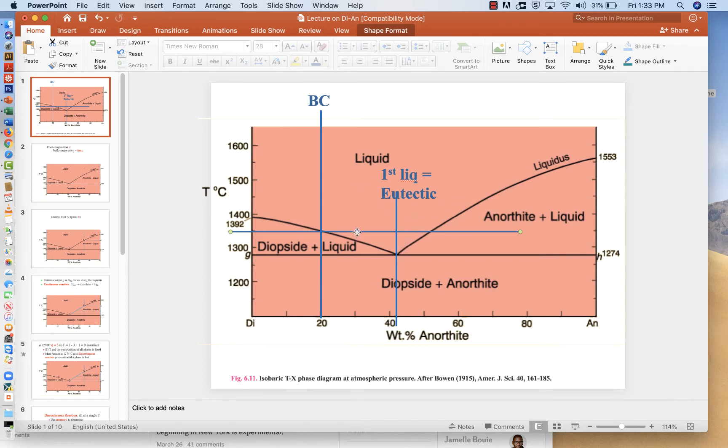Hi everybody. We're going to take a look at melting in this system, diopside plus anorthite. We're going to take this bulk composition here, BC, that's 80% anorthite and 20% diopside.